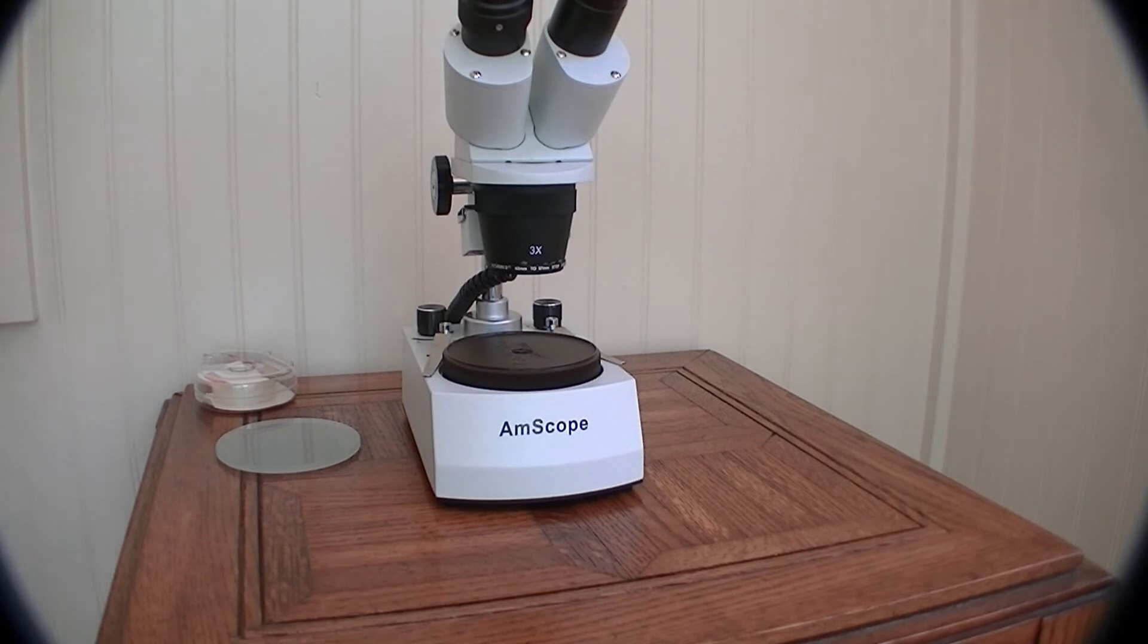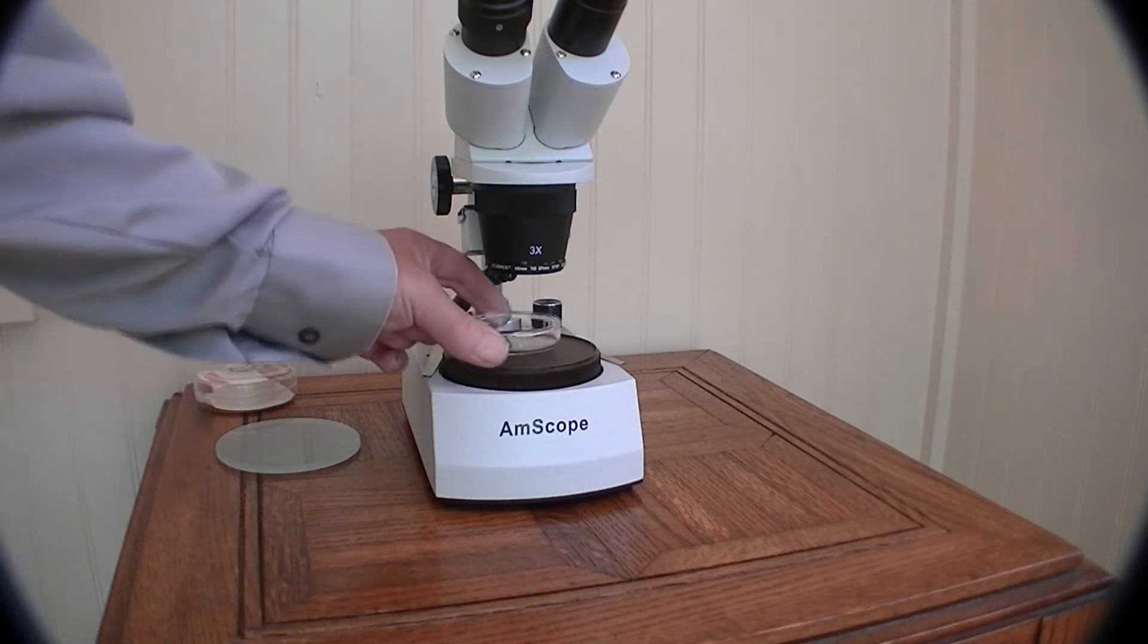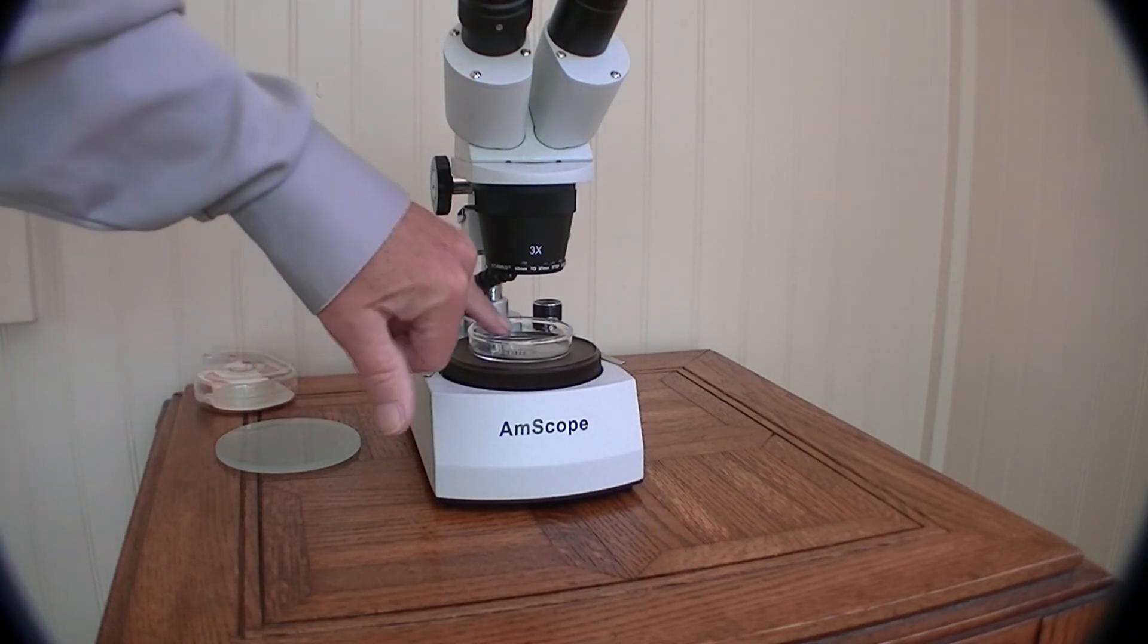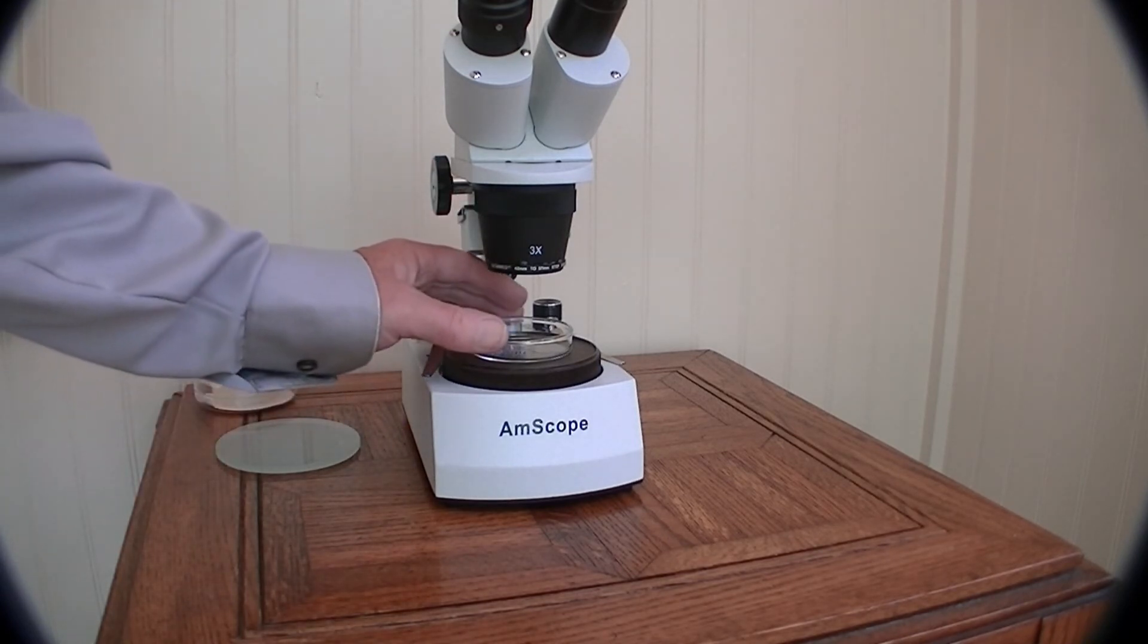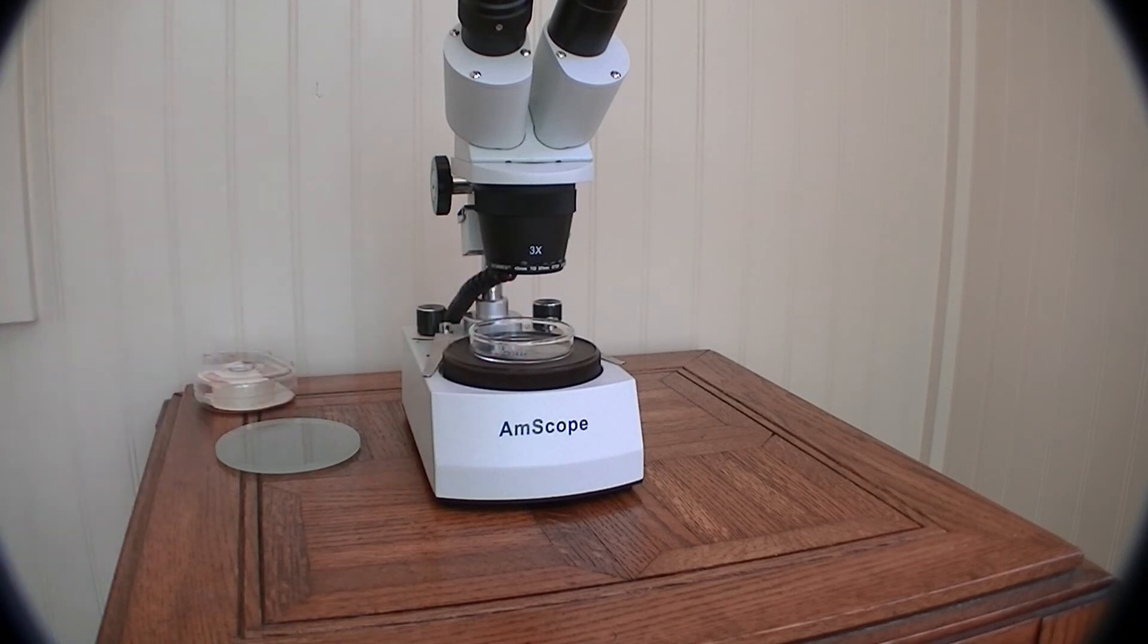When we put our sample on, say a petri dish containing pond water, the little bugs swimming around will reflect the light into the sample. You'll see the bright objects on a dark background, the dark field illumination.